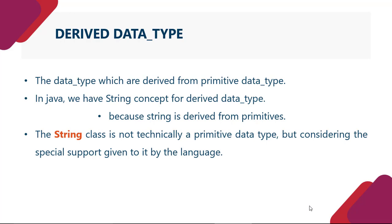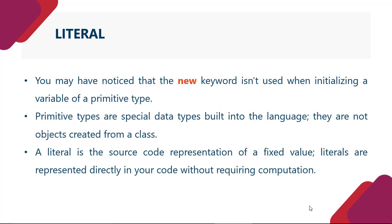All the primitives are keywords in Java. Ab jo dusre type ka data hota hai use bolta hai derived data type. The data types which are derived from primitive data type. In Java we have string concept for derived data type because string is derived from primitive. Jitne bhi primitive type ki data hai agar hum sabko merge bhi kar dein to ek string ban jati hai. The string class is not technically a primitive data type but considering the special support given to it by the language.